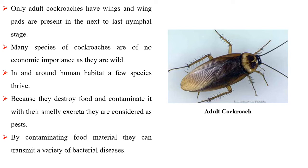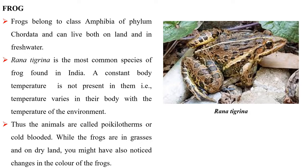Frog: Frog belongs to class Amphibia of phylum Chordata and can live both on land and in fresh water. Rana tigrina is the most common species of frog found in India. A constant body temperature is not present in them, that is, temperature varies in their body with the temperature of the environment. Thus, the animals are called poikilotherms or cold-blooded.